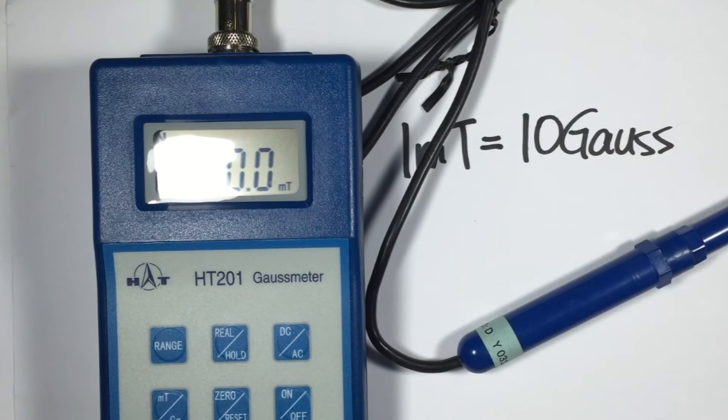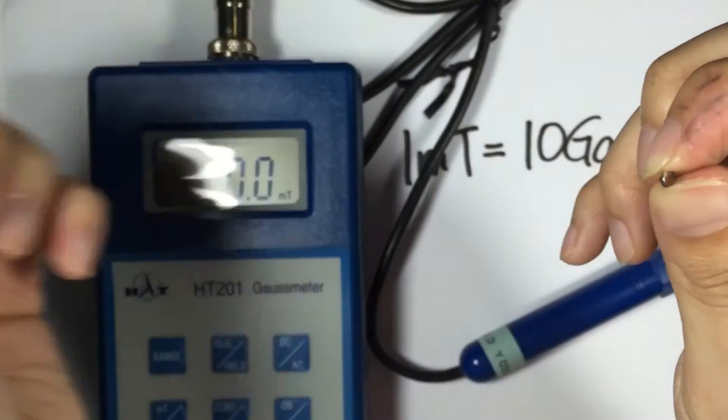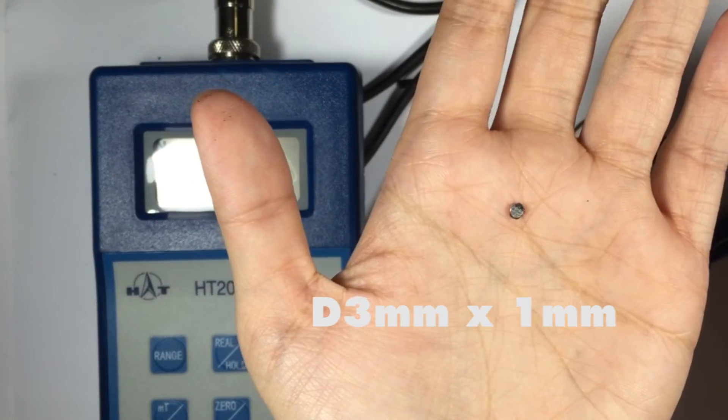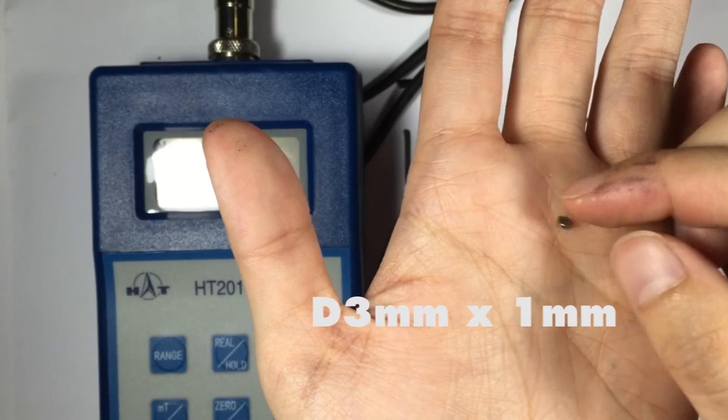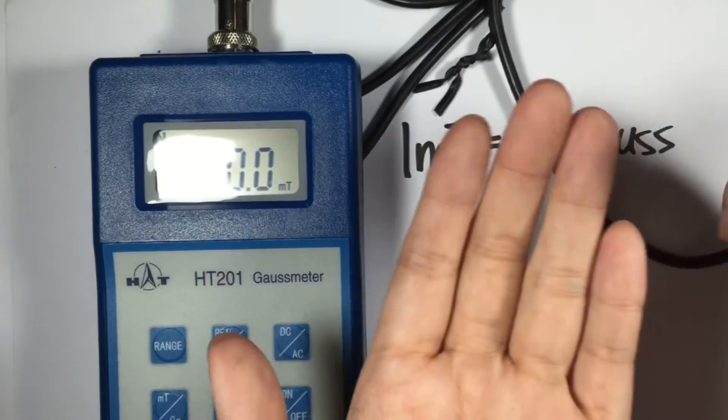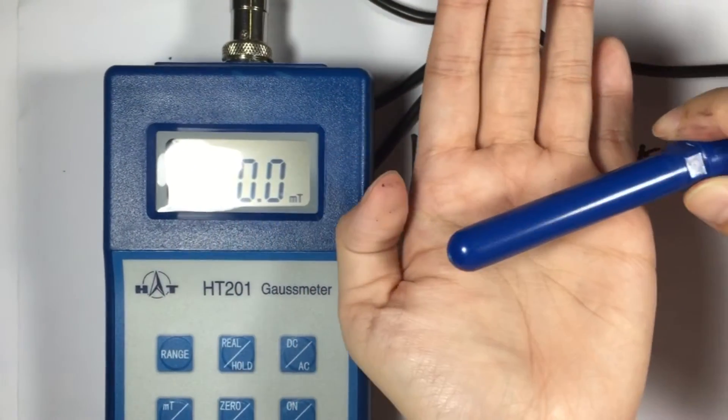Okay, so we can start with the tiniest magnet that we have, a 3 mm by 1 mm magnet. Okay, so we stick the probe to it like this.